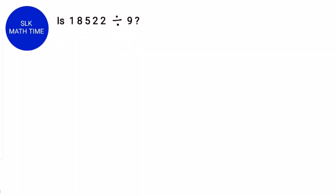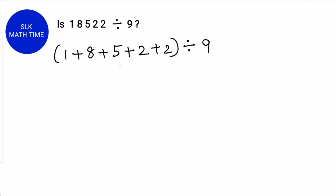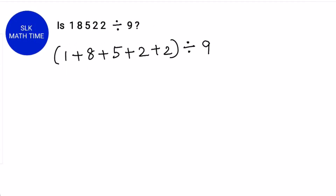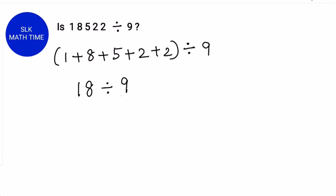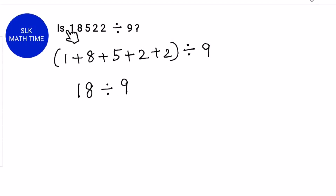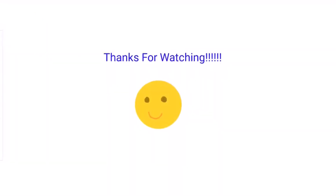Let's see another example. Is 18522 divisible by 9? First, let's add all the digits: 1 plus 8 plus 5 plus 2 plus 2. When we add this all together, we get 18, and 18 is divisible by 9 and also divisible by 3. So 18522 is divisible by 9. Thanks for watching.